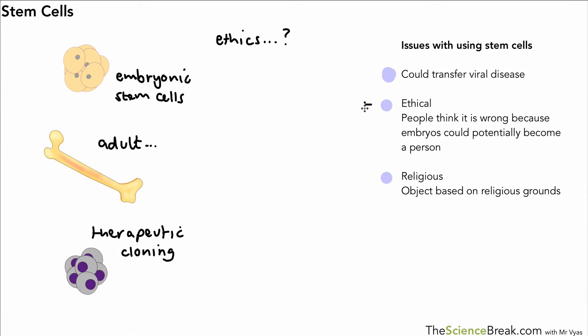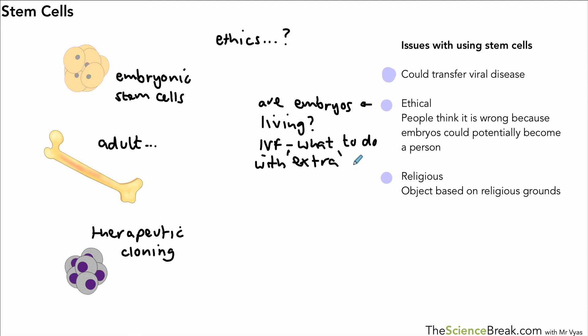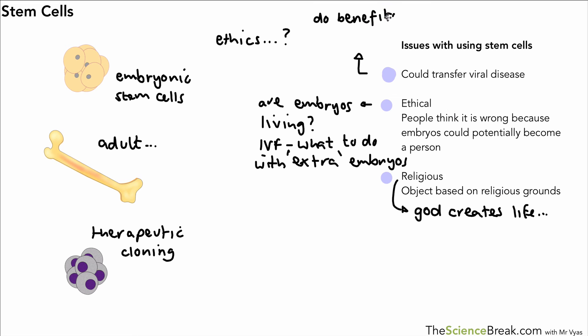The issues include the risk of transferring viral diseases, ethical concerns, and religious objections. Ethically, people think it's wrong because embryos could potentially become a person - so we must decide whether embryos are independently living things. IVF is legal, but what do we do with extra embryos - surely it's better to use them for stem cell research. Religiously, people may object because it's seen as the role of God to create life and we shouldn't be interfering with embryos. On the viral disease point, we must ask whether the benefits outweigh the risks - if there's a 10% chance of transferring viral disease, there's also a 90% chance of possibly curing a condition like paralysis.